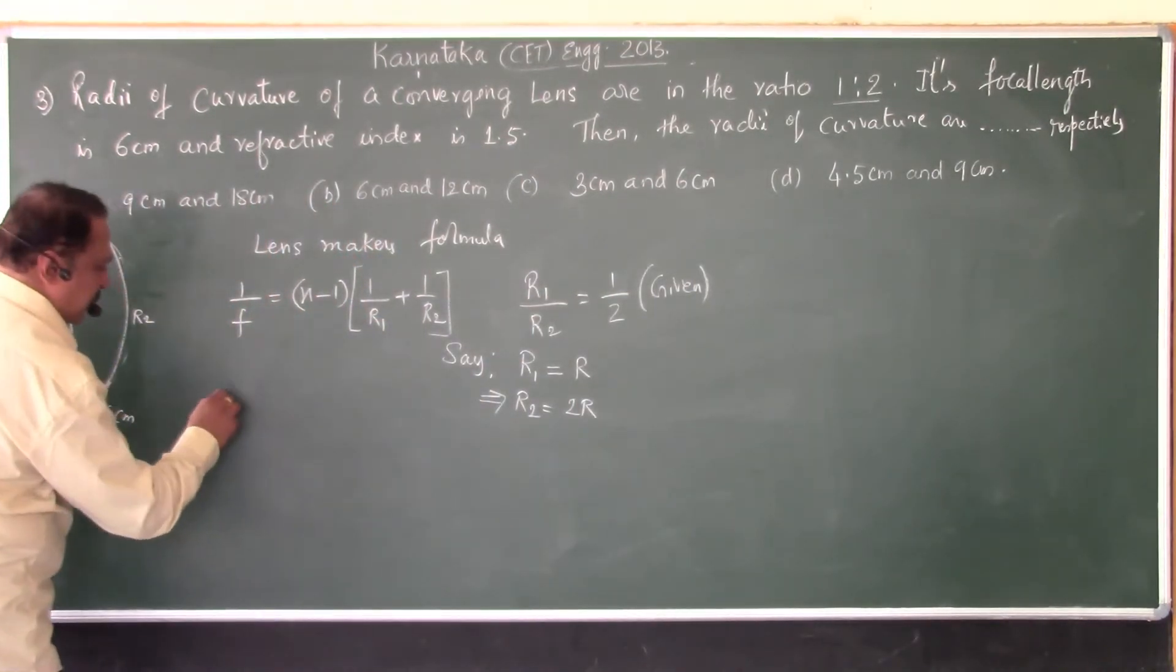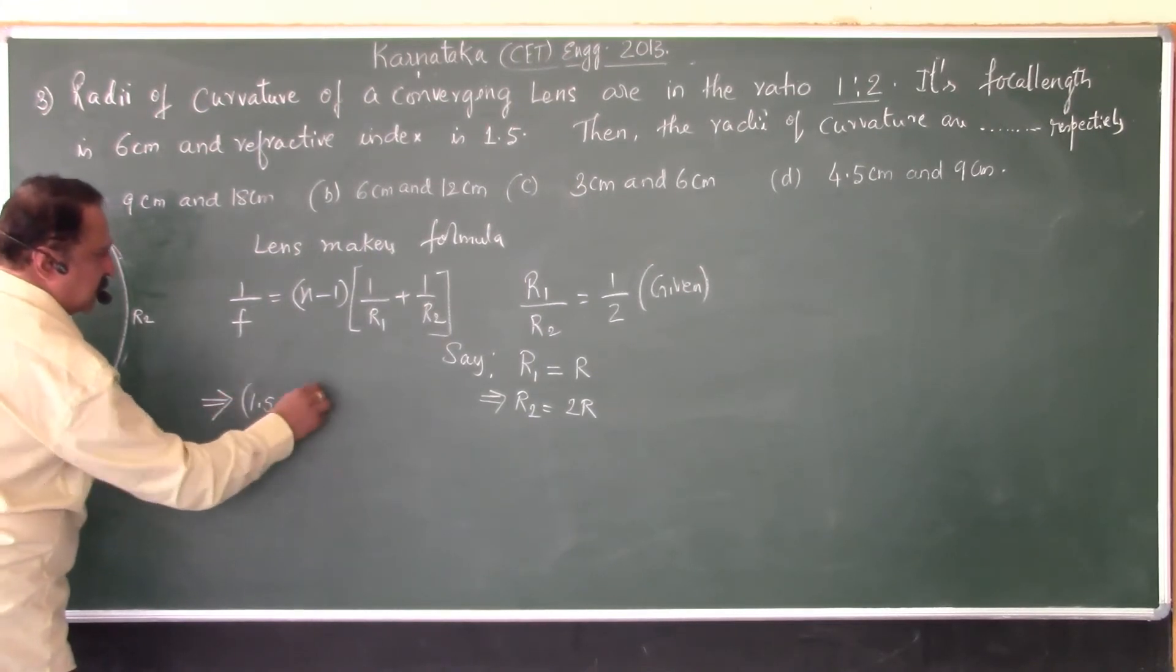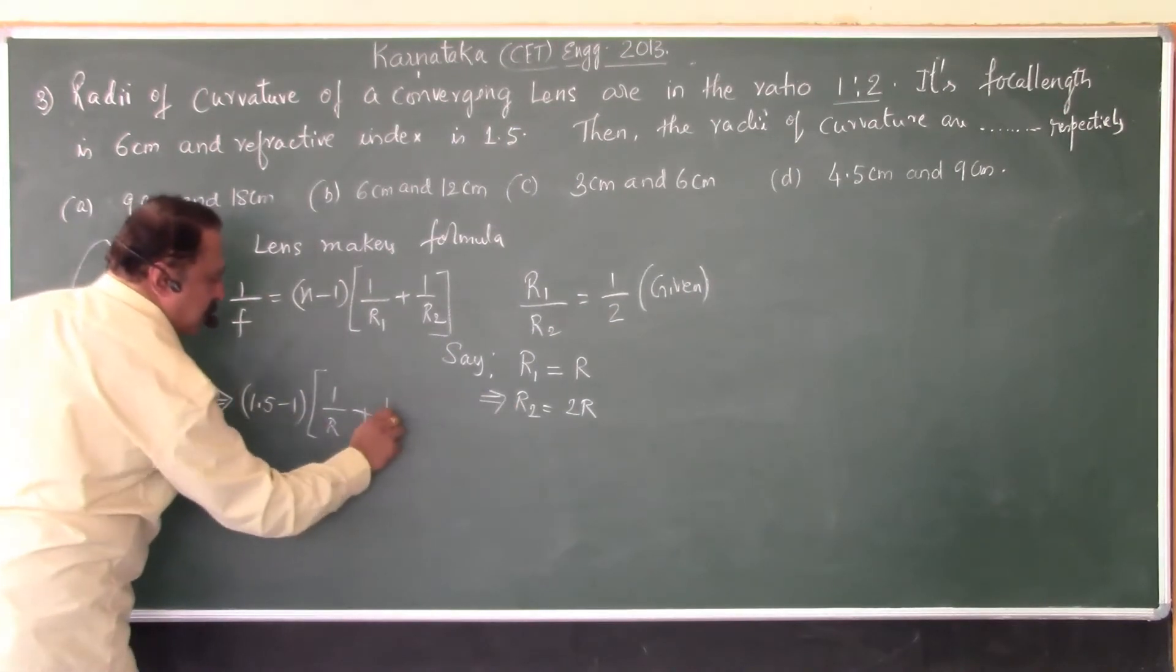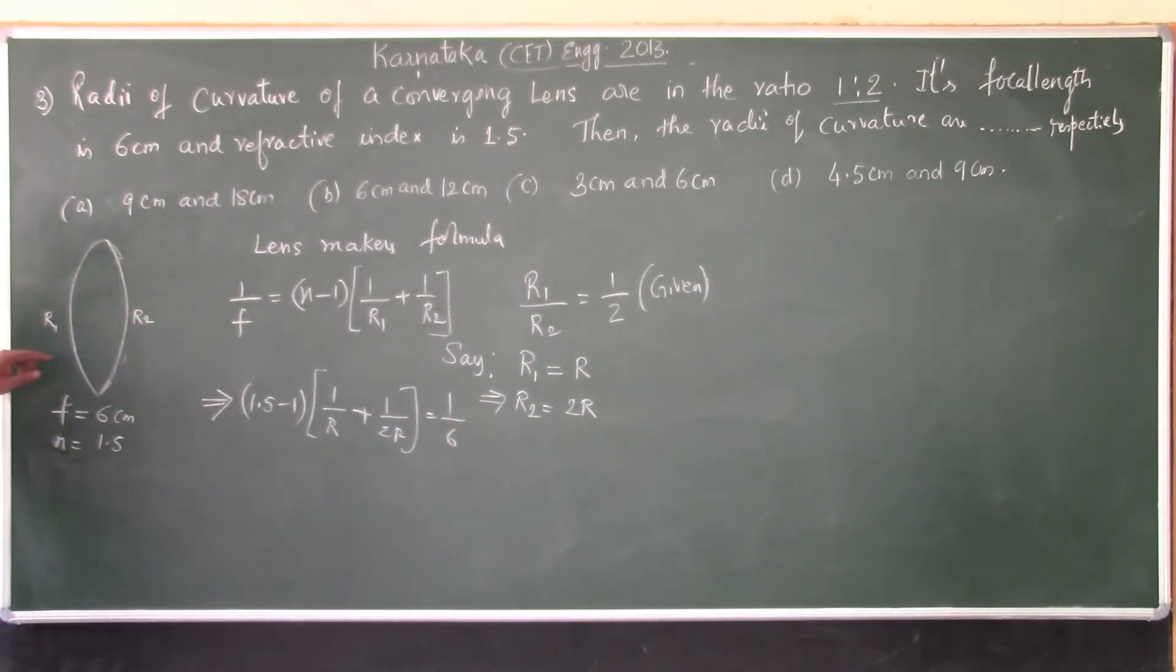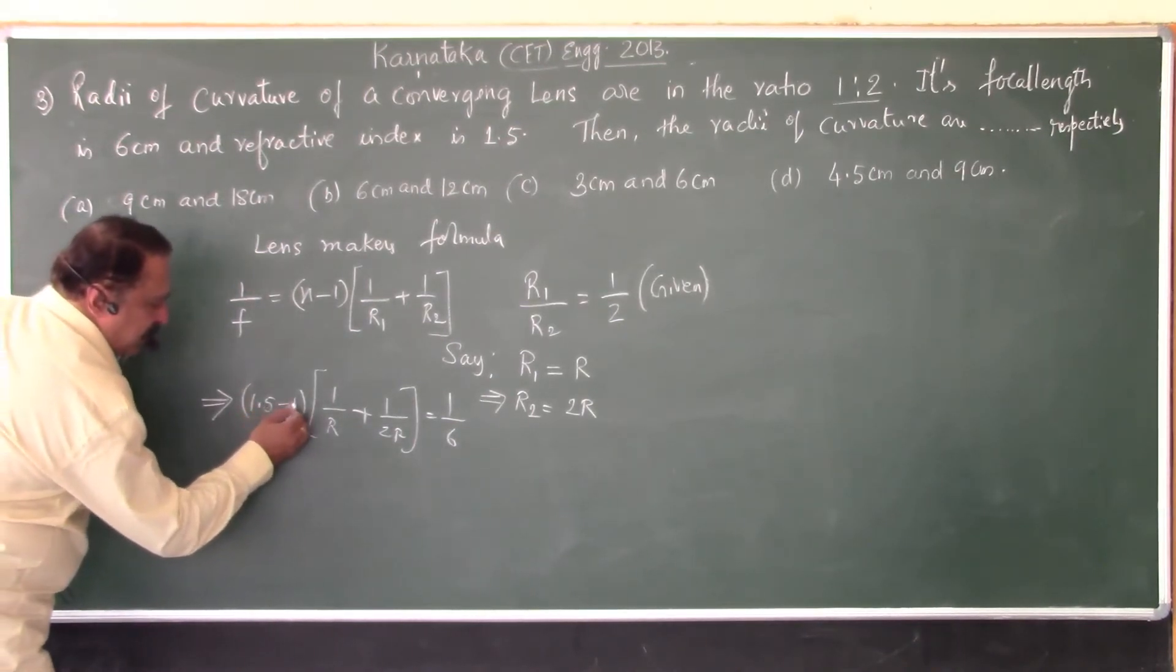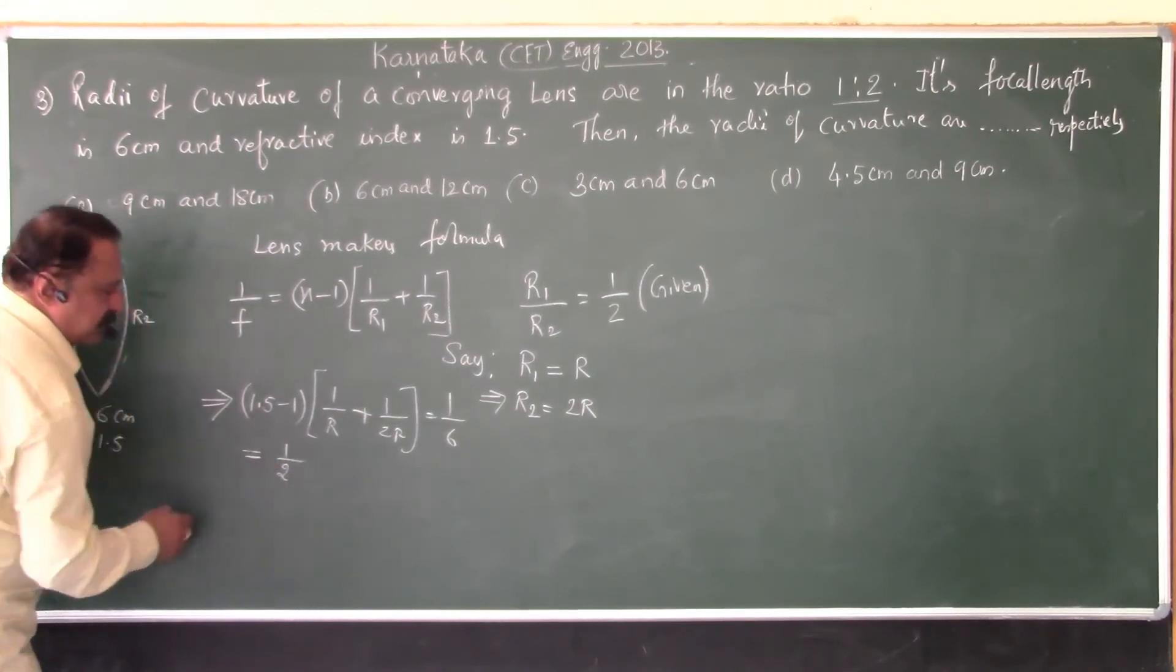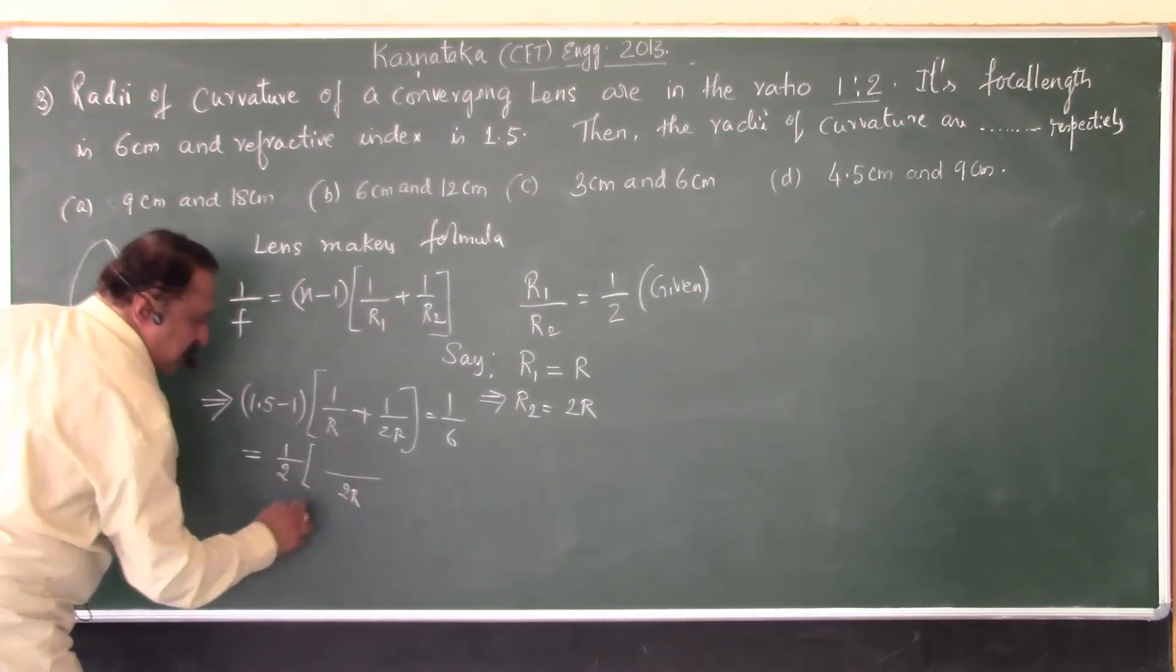Now, let us substitute these values. n is 1.5 minus 1 into 1 by R plus for R2 I put 2R, 1 by 2R. This is equal to 1 by 6. The LHS is equal to 1 by F. 1.5 minus 1 is 0.5, so I write 0.5 as half. Now, take LCM here, 2R.